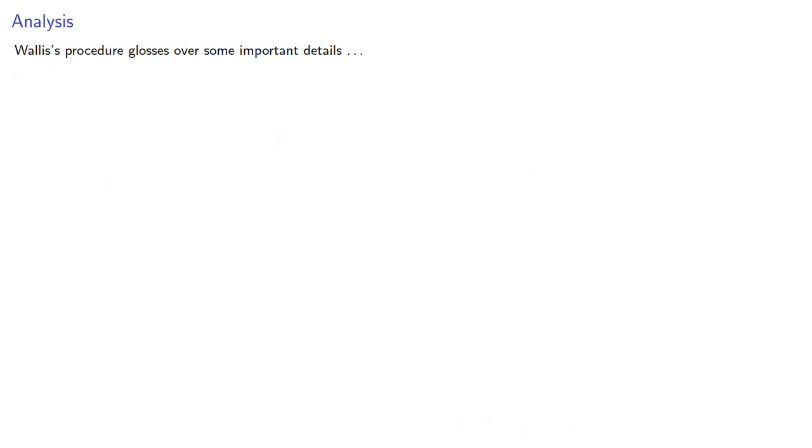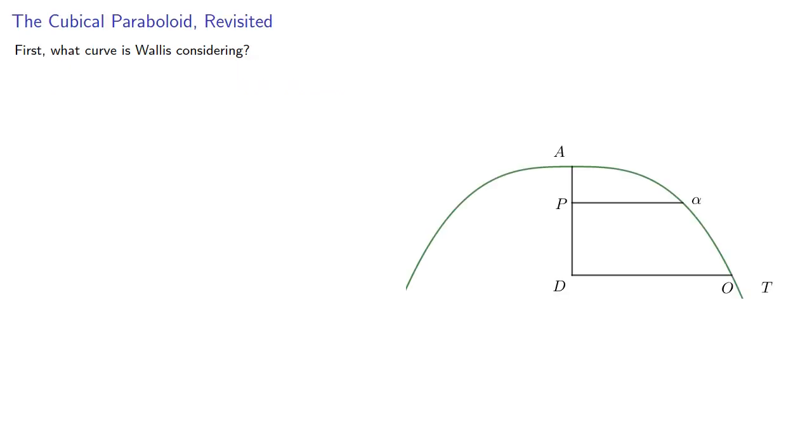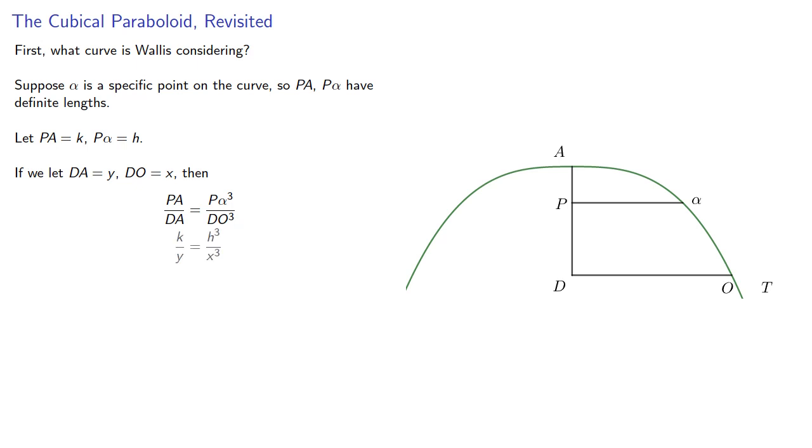Now Wallace's procedure glosses over some important details. However, we can make it rigorous with a little bit of work. So to begin with, let's think about the curve that Wallace is considering. Suppose alpha is a specific point on the curve, so PA and P alpha have definite lengths. Let PA be, say, K and P alpha be H. If we let DA equal Y and DO equal X, the defining property of the curve is that PA is to DA as P alpha cubed is to DO cubed. And if we simplify, we get Y equals CX cubed.